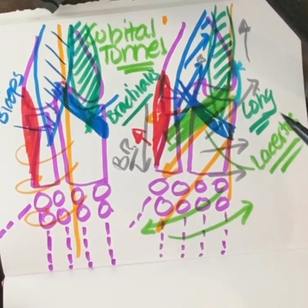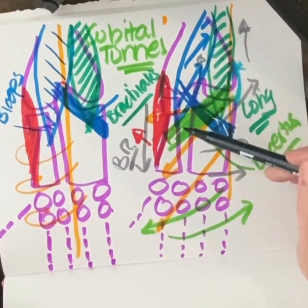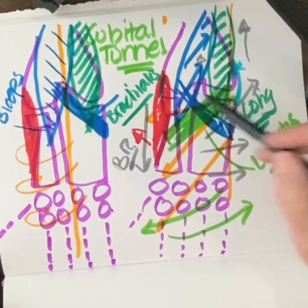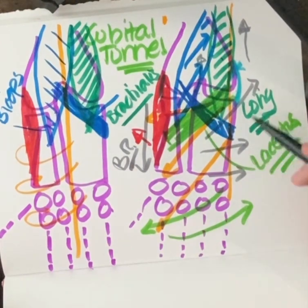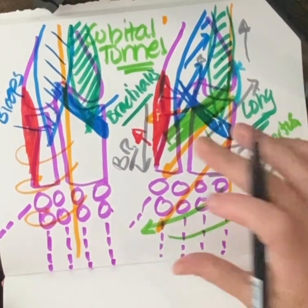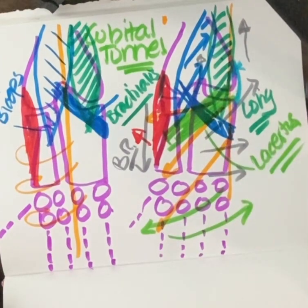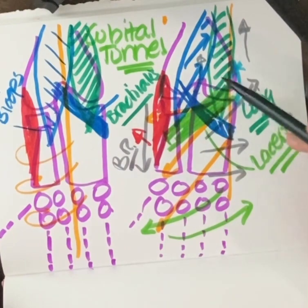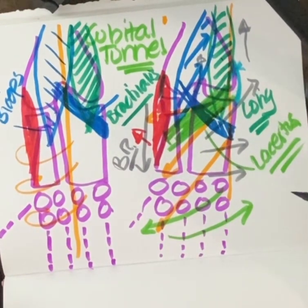So essentially, if you want to strengthen brachialis, lengthen out bicep, lengthen out brachioradialis, stretch out anconeus, and really work on getting those muscles active on the medial side, we'll have less traction on the ulnar nerve and eventually less traction on the median nerve where the lacertus syndrome is occurring. I'll write down which muscles I work on and in what order to strengthen these.